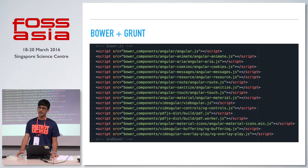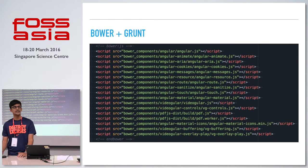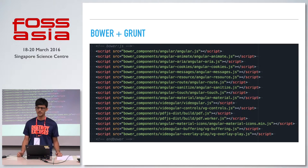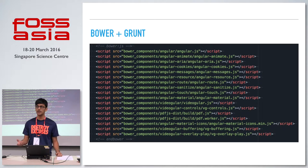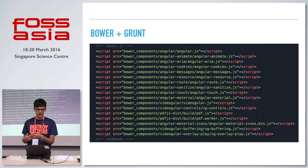But the problem with Bower is that you also need to use Grunt or Gulp. These are the task runners which you use to bundle your app for production. You don't want your user to be loading all these 15 to 20 dependencies. You want a small, solid, minified — or as we call it, uglified — file which is loaded fast.